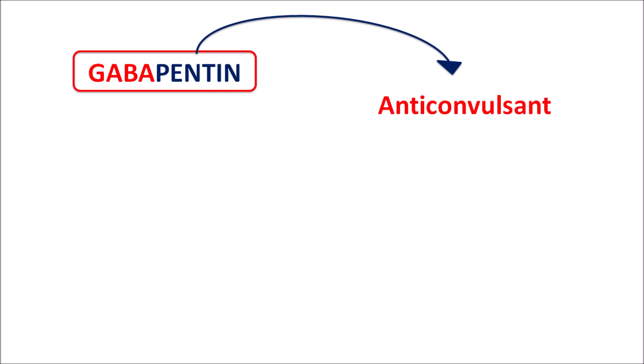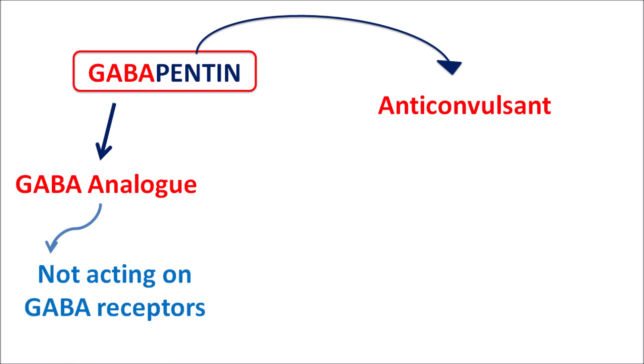GABA is an inhibitory neurotransmitter within the CNS. The prefix 'gaba' in gabapentin indicates that this drug is structurally related to GABA — it is a GABA analog. However, gabapentin is not acting on GABA-A or GABA-B receptors.